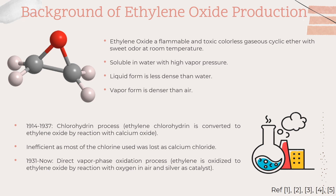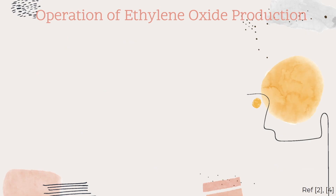The modern method, developed in 1931 and used until now, is the direct vapor phase oxidation process, where ethylene is oxidized to ethylene oxide by reaction with oxygen in air, and silver is used as catalyst. The process flow is indicated in the Visio flow, and the steps are as follows.